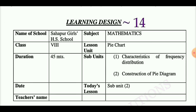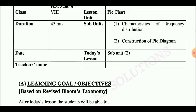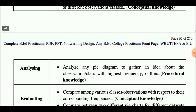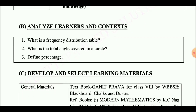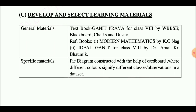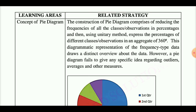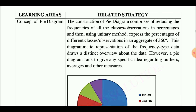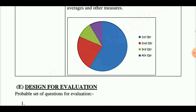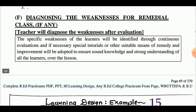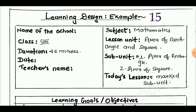We have reached learning design number fourteen, taken from class eight. Today's lesson subunit two is construction of a pie diagram. The learning design objectives are: remembering, understanding, applying, analyzing, evaluating, creating. Analyze learner and context, develop and select learning materials, learning strategy divided into learning areas and related strategy. Learning areas include concept of pie diagram. Design for evaluation: you may write questions from the pie diagram. Finally, diagnosing the weakness.